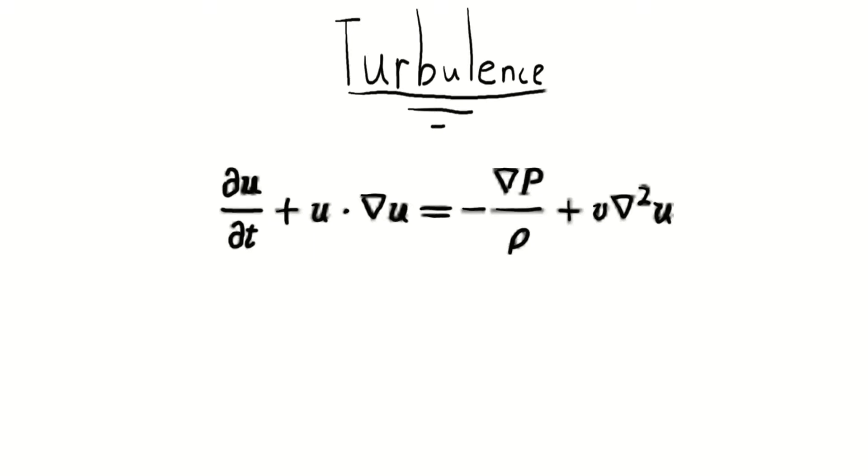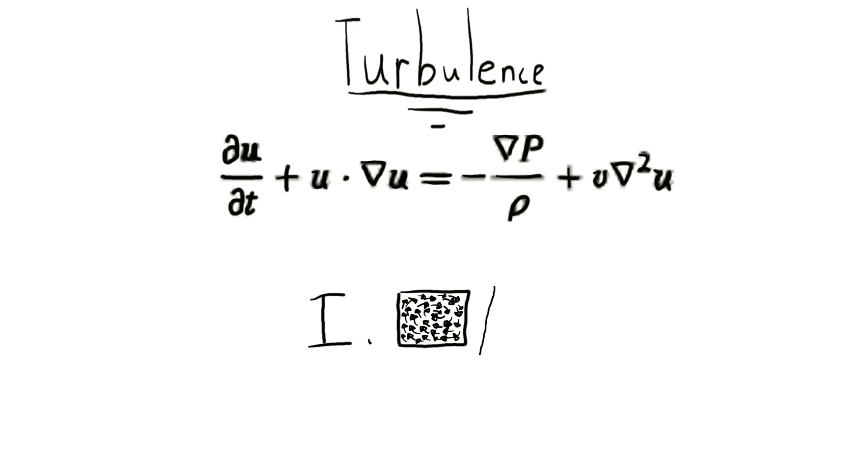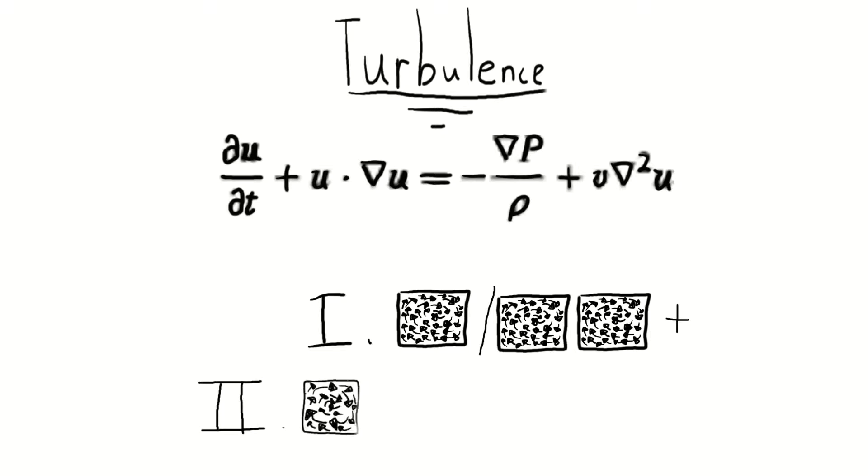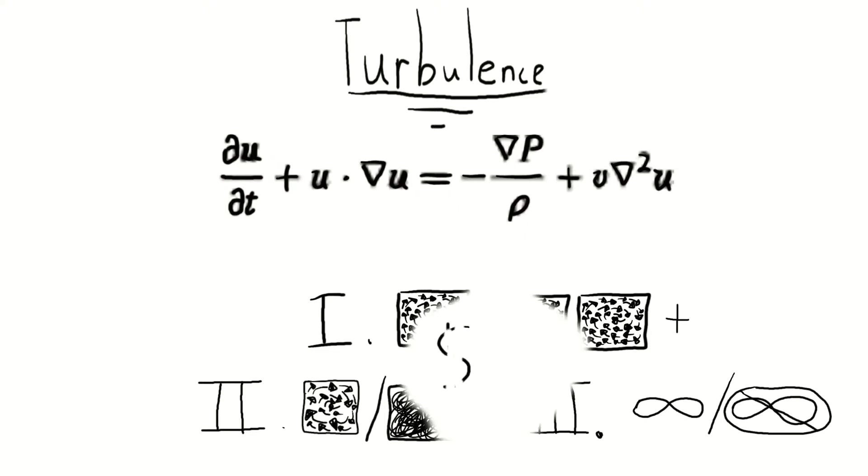if you can prove or disprove that the Navier-Stokes equations always spit out exactly one solution, or that the solutions are always smooth and continuous, or that the solutions might become infinite, then you'll win a million dollars from the Clay Mathematics Institute.